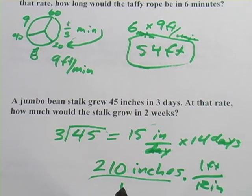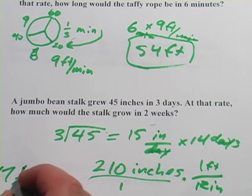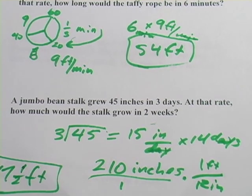210 divided by 12, and that's 17.5 or 17.5 feet. Boy, that's a tall beanstalk.